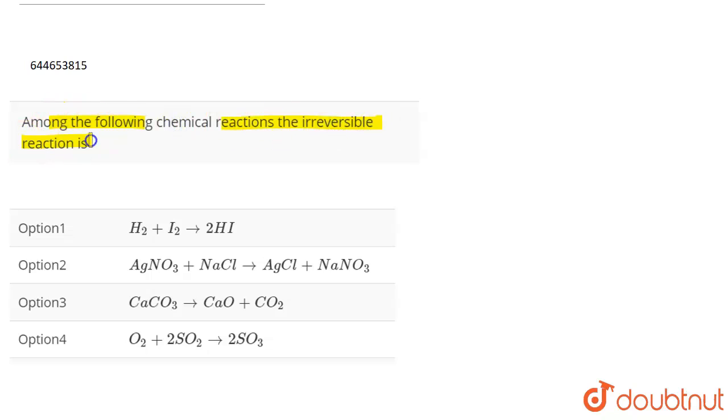Now, irreversible reactions are those which cannot reverse their direction, which can only take place in one direction, and they cannot be reversed back. The reactants once converted to products cannot be converted back to the reactants.